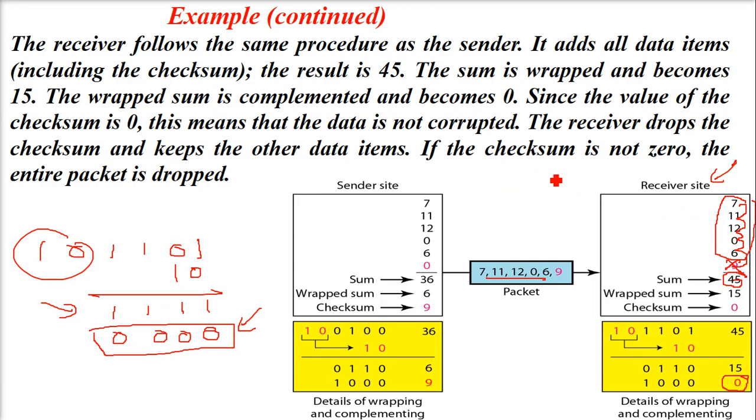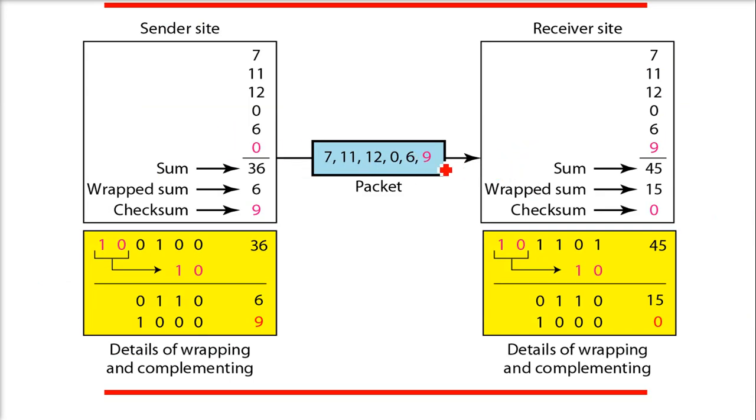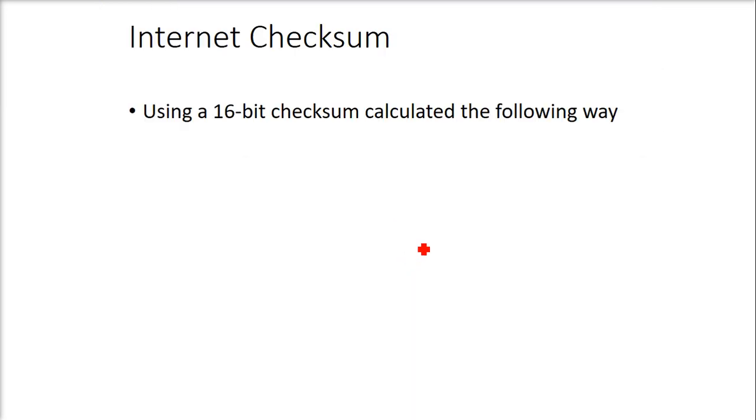If the checksum is not 0, the entire packet can be dropped. This is the whole idea of finding and verifying the checksum.